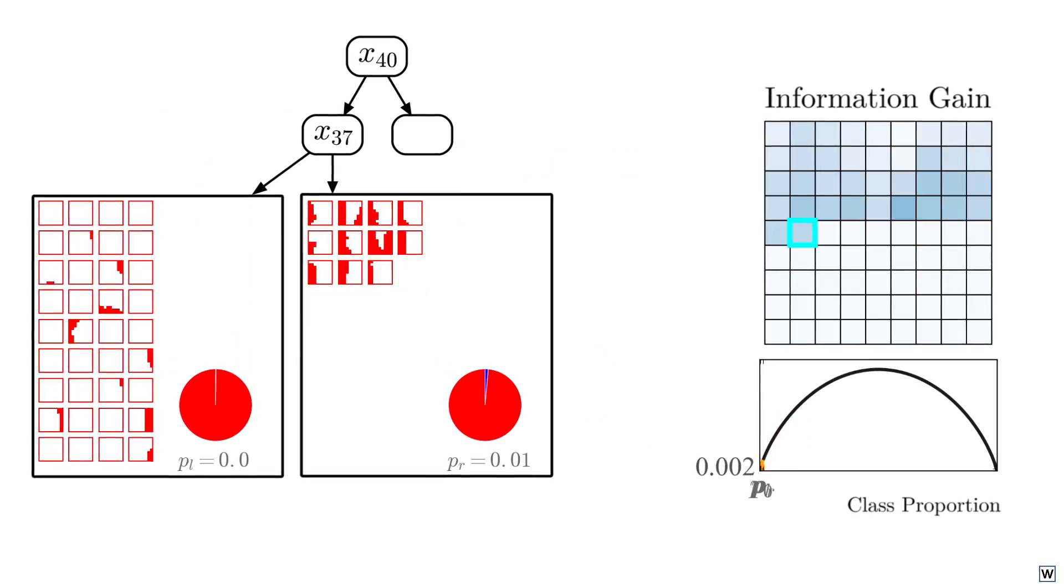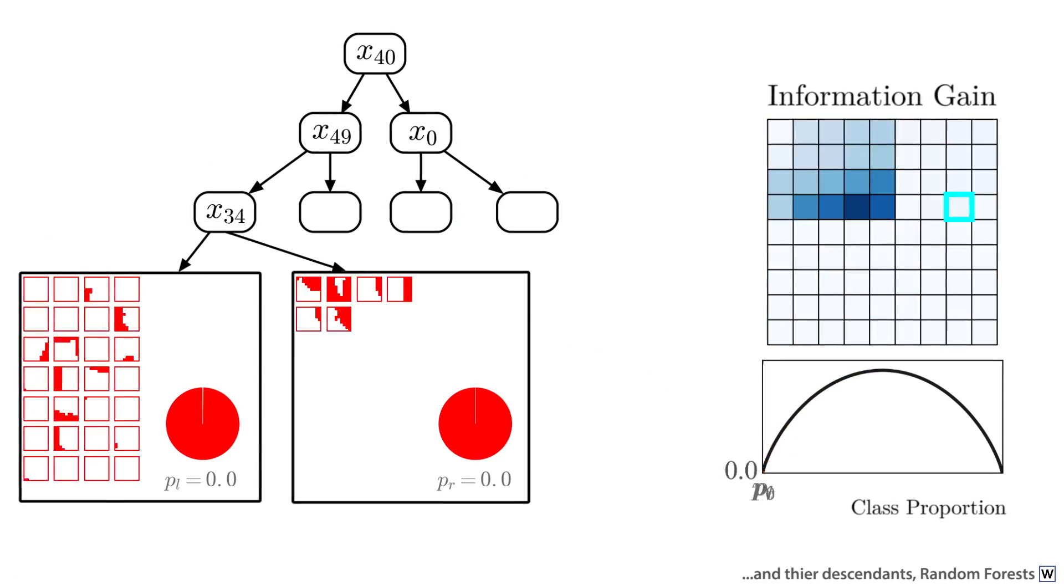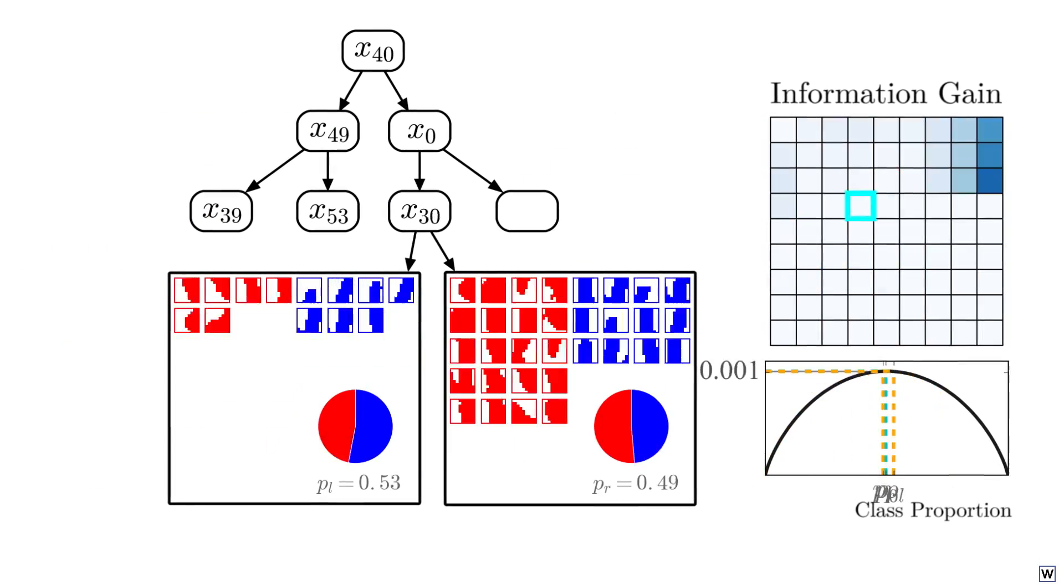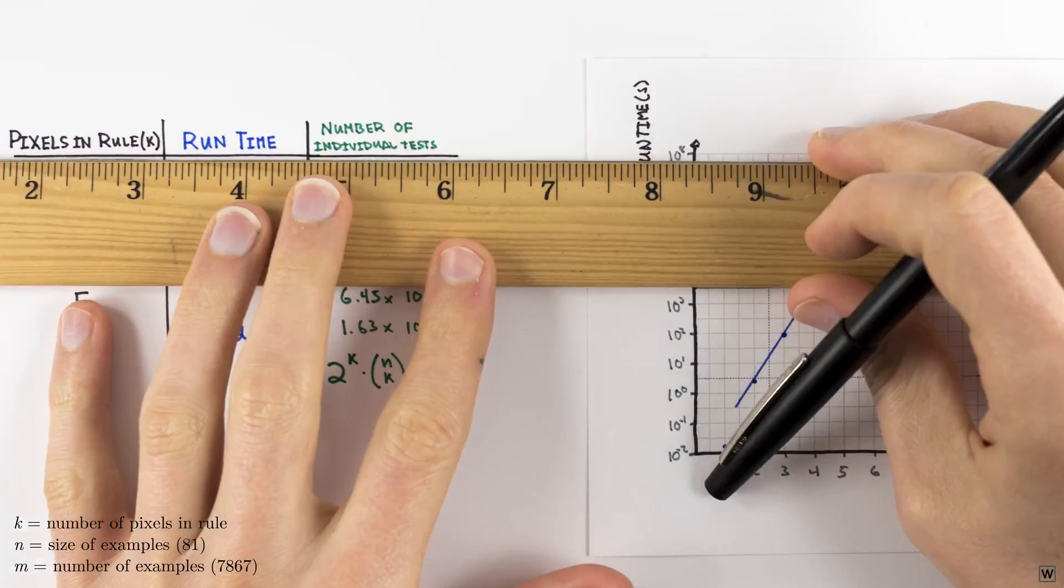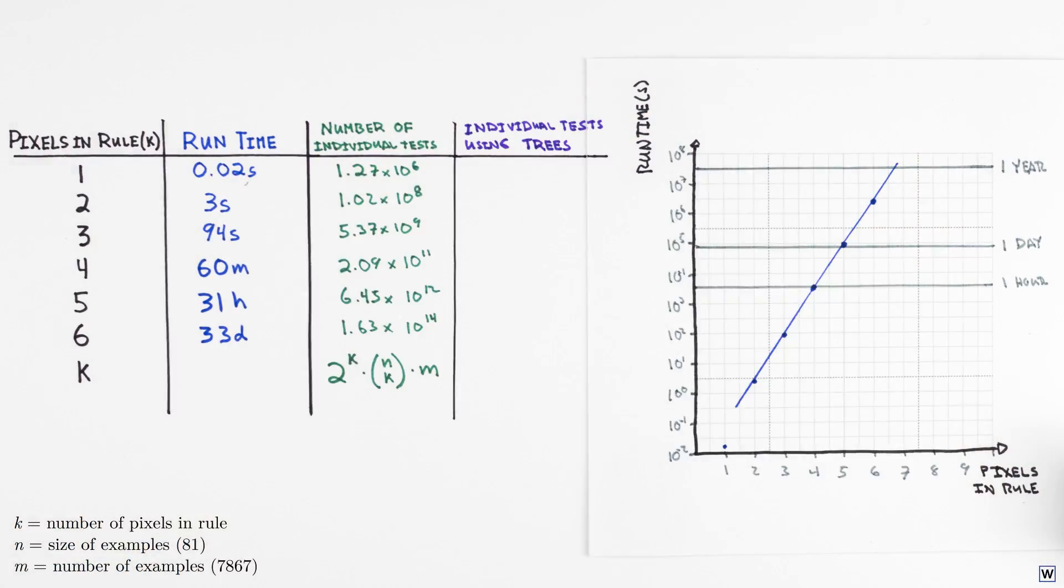The algorithms they developed, decision trees, are going to allow us to dramatically speed up our search. The speed up decision trees will allow for, when applied to our problem, are absolutely absurd.